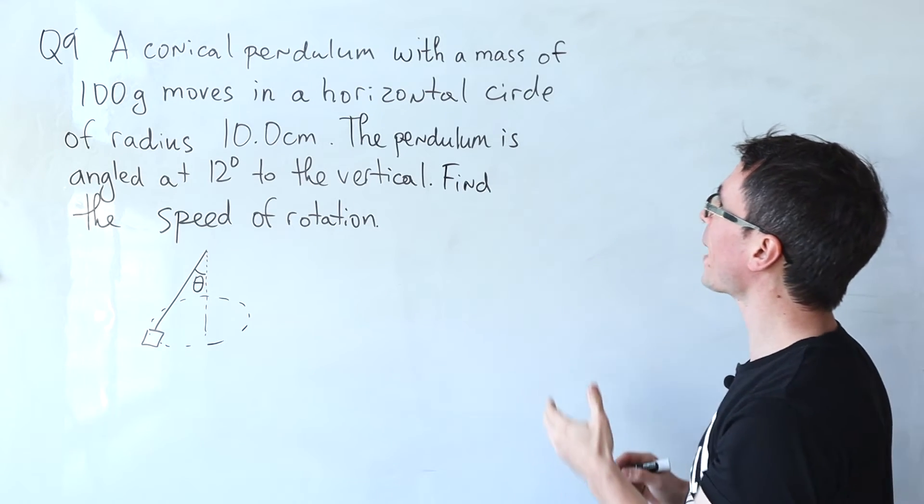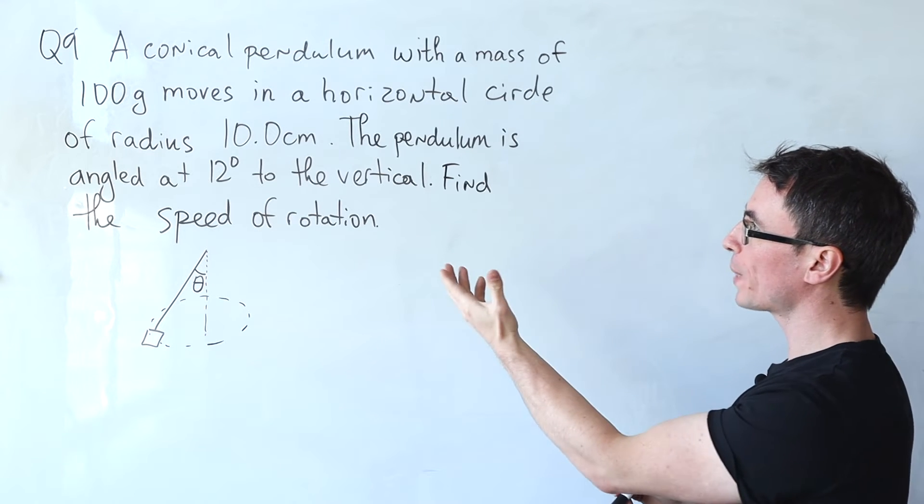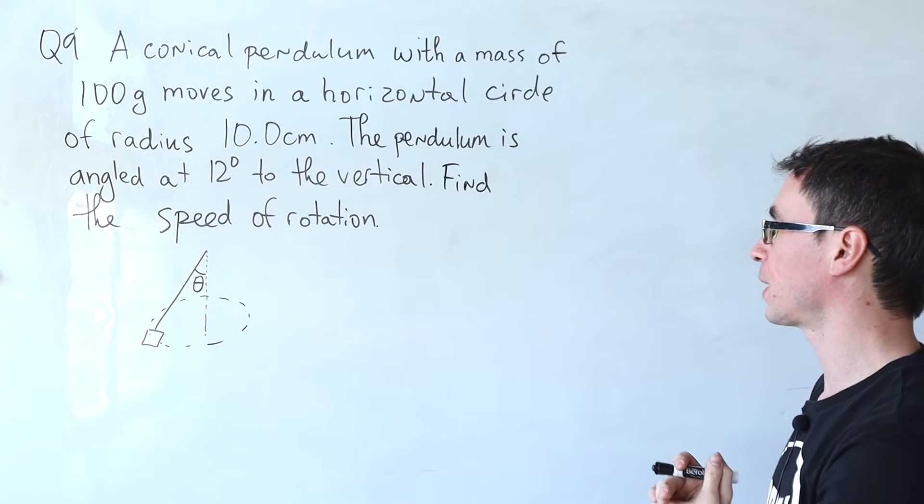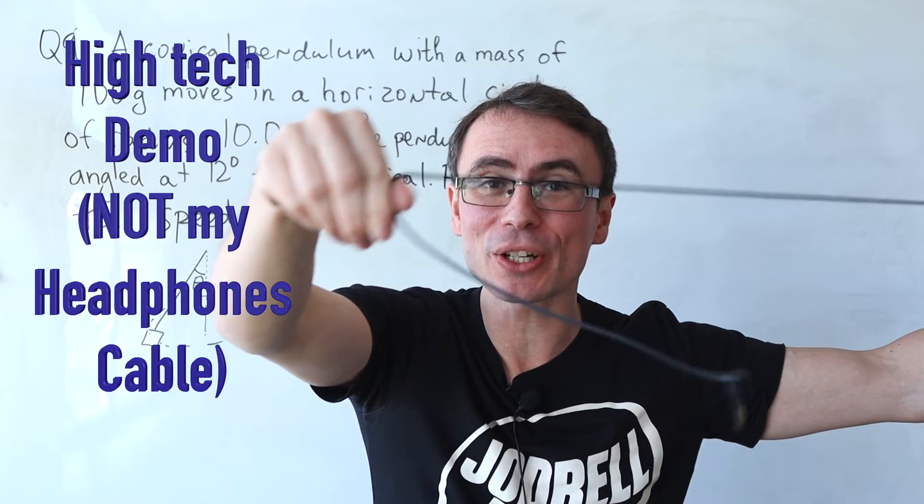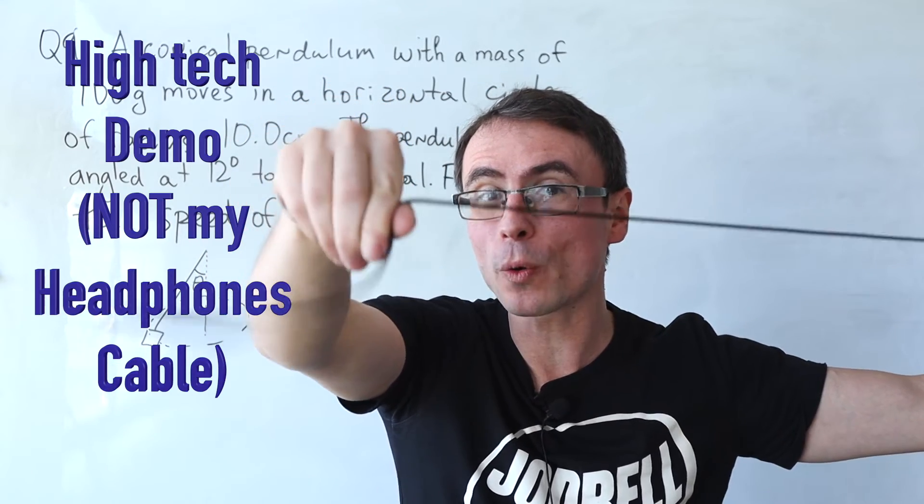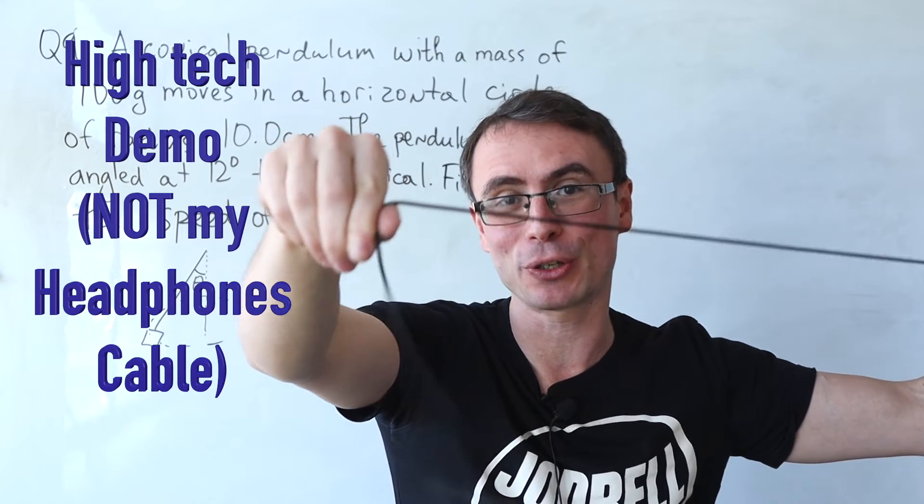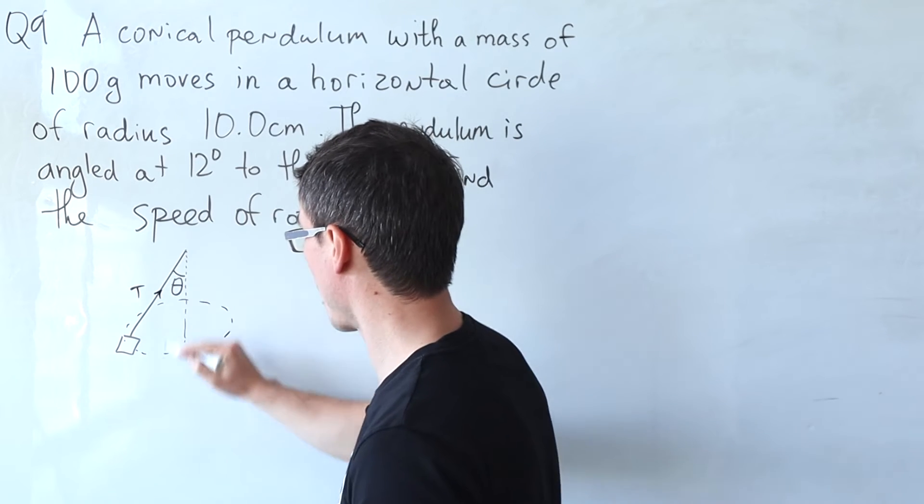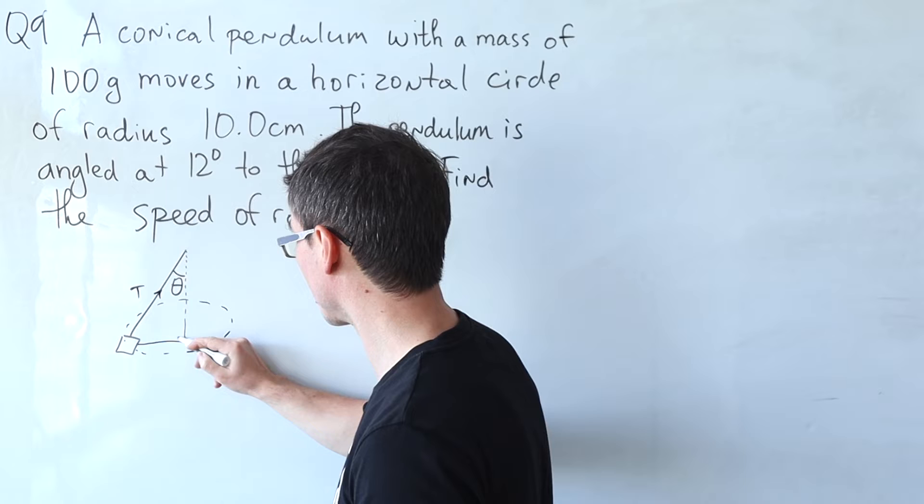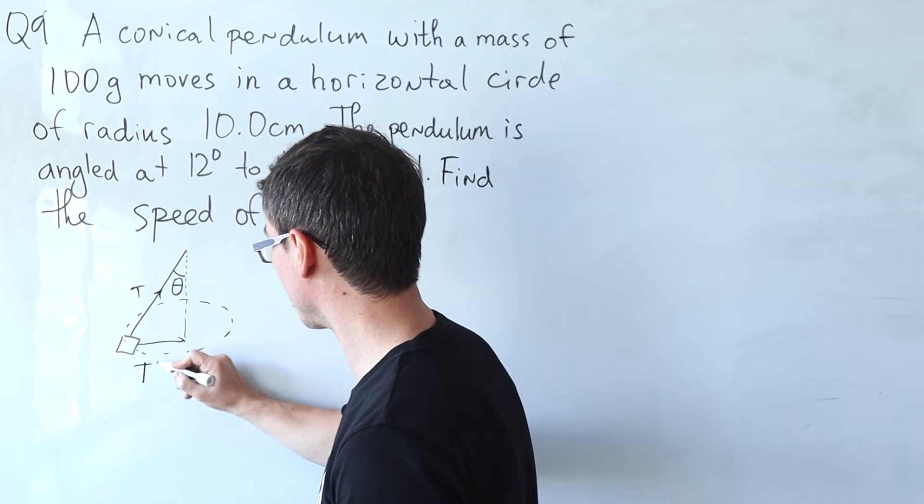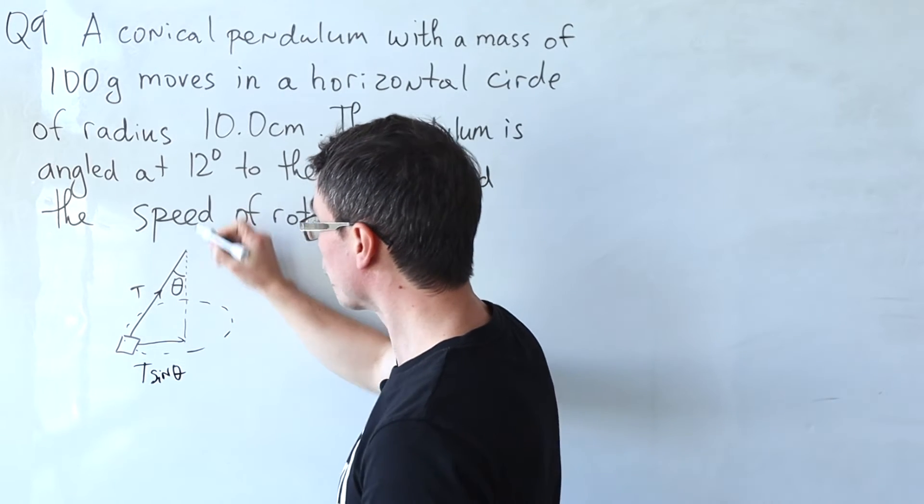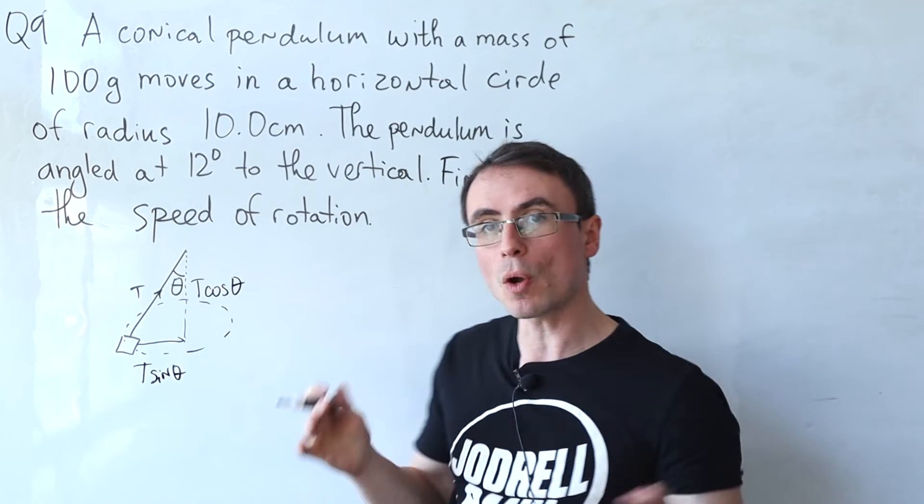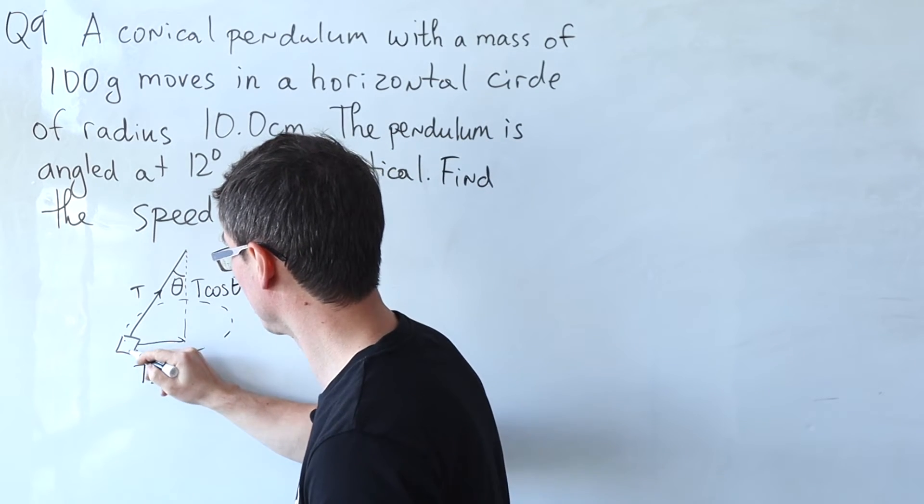Next one, a conical pendulum with a mass of 100 grams moves in a horizontal circle of radius 10 centimeters. The pendulum is angled at 12 degrees to the vertical. Find the speed of rotation. We can visualize this conical pendulum with this cable moving in a horizontal circle and it's the tension that is keeping it doing so. We have the tension acting upwards and the tension can be resolved into two components: a horizontal component towards the center of the circle which is t sin theta, and a vertical component which is t cos theta. The tension is not the only force though, we also have the weight acting straight downwards.